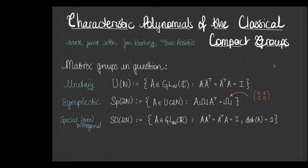So, characteristic polynomials of the classical compact groups. Which matrix groups am I particularly focusing on? Well, unitary, symplectic and orthogonal matrices. I give the definitions here. At the top we have the unitary matrices. These are the invertible N by N matrices with entries in C, such that they obey the property that the conjugate transpose is the matrix inverse. This is always going to be the canonical matrix group we're thinking about. I will always write capital N for the matrix size.